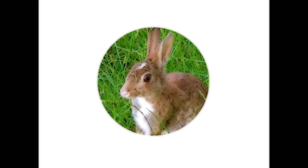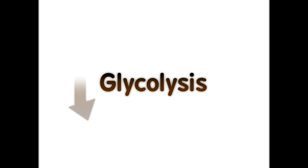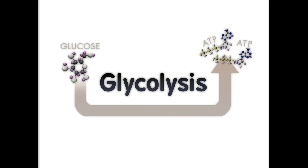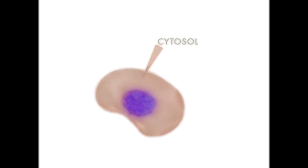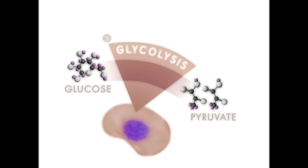Biological organisms require energy to survive. Glycolysis is one of the pathways cells use to transform sugars like glucose into biochemical energy in the form of ATP. In the cytosol of the cell, glycolysis converts glucose into pyruvate through a series of 10 enzymatic reactions.